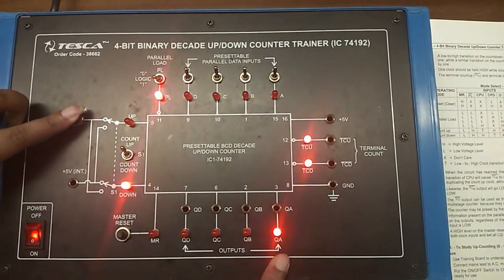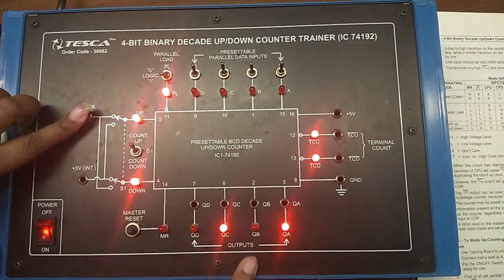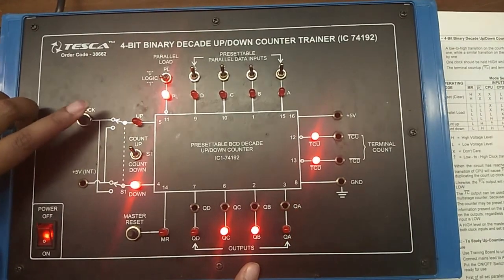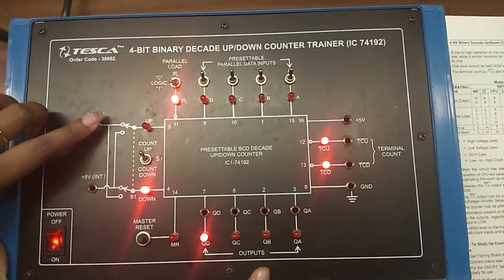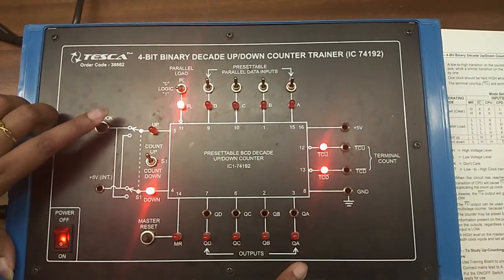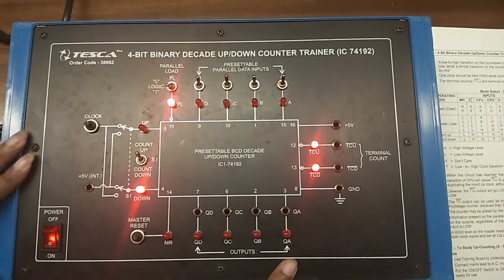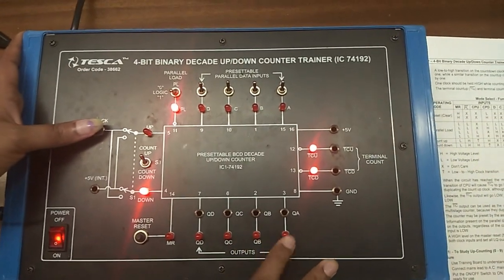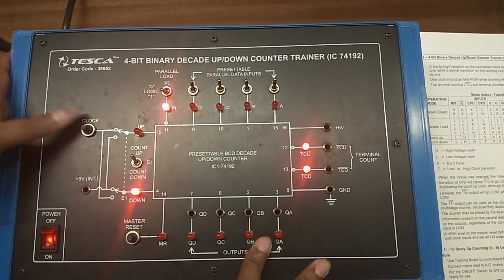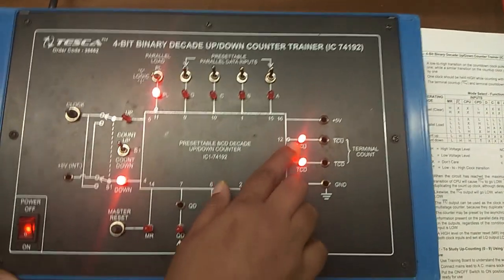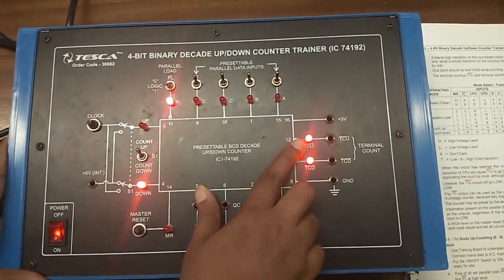Now we are counting: 1, 2, 3, 4, 5, 6, 7, 8, 9, and this is 0. When the circuit has reached the maximum count state of 9, this TCU LED will go low, means it will be off.